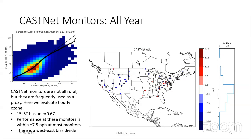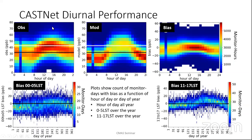Thinking about the seasonality, things become more interesting. On this slide we have the observations in the upper right, the model, and then the bias as a function of the hour of the day. The white line is the mean of the observations, the black line is the mean of the model. You can see the model has average low bias compared to the observations, and in the spring, the model is mostly low biased.